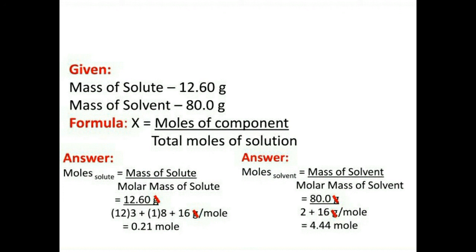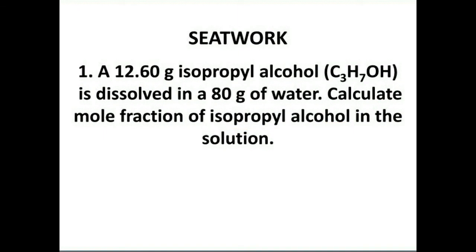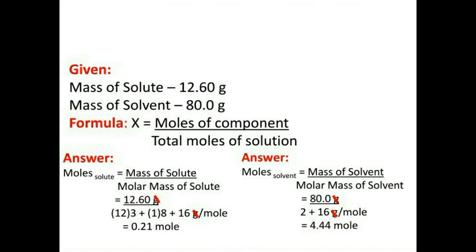Moles of isopropyl alcohol = mass ÷ molar mass. Mass = 12.60 g. Molar mass of C₃H₇OH: carbon = 12 × 3 = 36; hydrogen total = 8 atoms (7 + 1 from OH) = 1 × 8 = 8; oxygen = 16 × 1 = 16. So molar mass = 36 + 8 + 16 = 60 g/mol. Moles of isopropyl alcohol = 12.60 ÷ 60 = 0.21 moles.